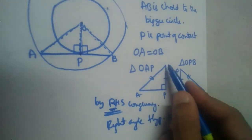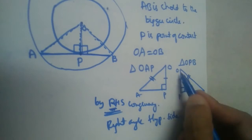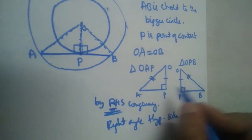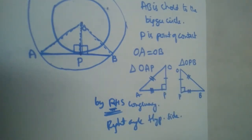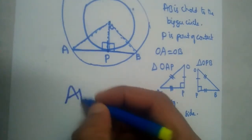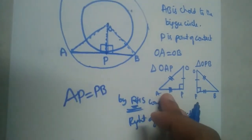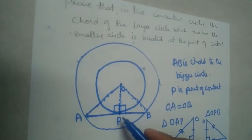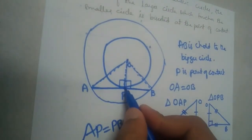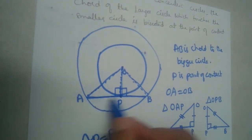RHS congruency stands for Right angle, Hypotenuse, Side. In a right-angle triangle, if the hypotenuse and one side are equal, the triangles are congruent. Here we have two right-angle triangles; the hypotenuse sides are equal, and OP is common to both. So the two triangles are congruent, which means AP equals PB.